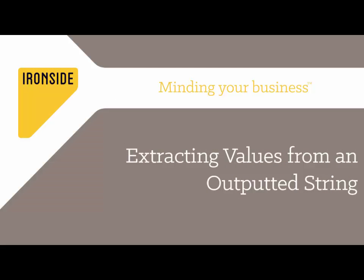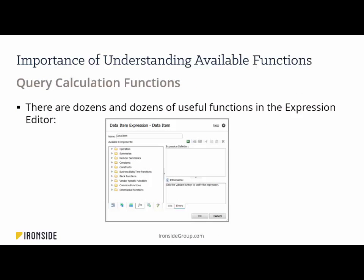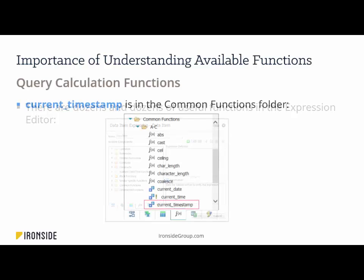We'll start with extracting values from an outputted string. There are many functions in the Cognos system that are used in both query calculations and layout calculations. In this example, we'll look at a query calculation function, found underneath the Common Functions folder and the A through C folder. Specifically, we'll be examining the current timestamp function.